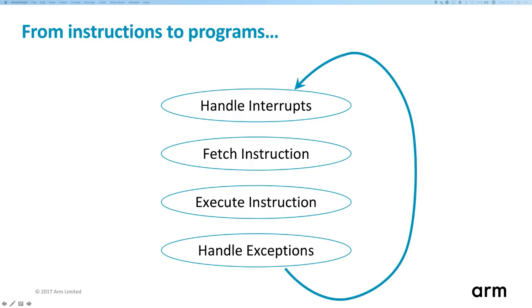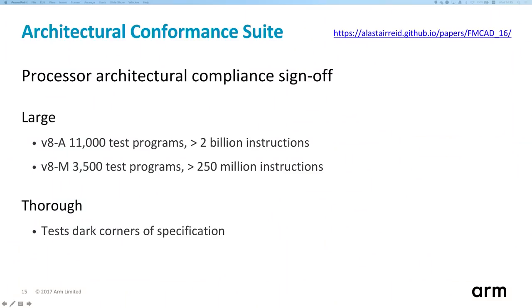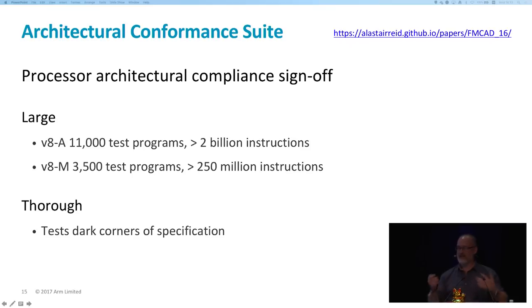Most of us actually run programs, so to turn this specification into something that can execute programs — in other words, a simulator for the ARM architecture — you need to add a little loop that handles interrupts, fetches instructions, executes them, and handles exceptions. I did this, added the loop to the specification, and then thought I'd better try testing it. I have access to ARM's internal test suite, which is something ARM has been working on since the company started 25 to 30 years ago. It's quite large, extremely thorough — tens of thousands of test programs, running billions of instructions.